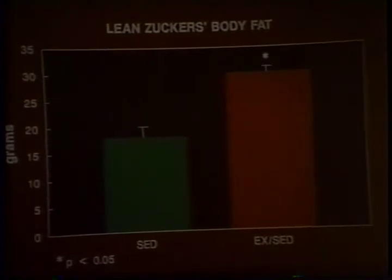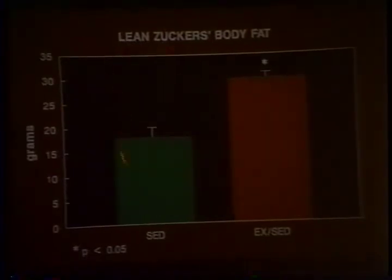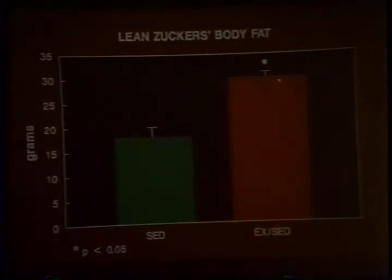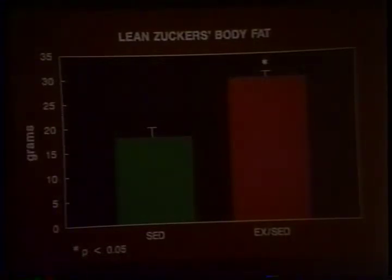The sad news about this study: we took all the rats at eight weeks of age and stopped them from exercising, then looked at them at six months of age. In the lean animal that never exercised, body fat was about 20 grams. But in the formerly active lean animal, it was fatter at six months than it would have been if it had never exercised. This intrigued us, and we did a series of studies looking at what we call the retired athlete — albeit a rat.